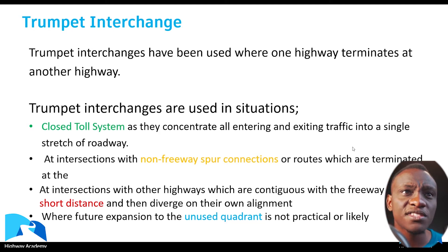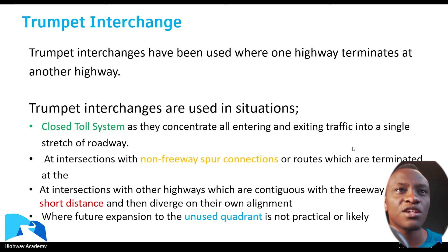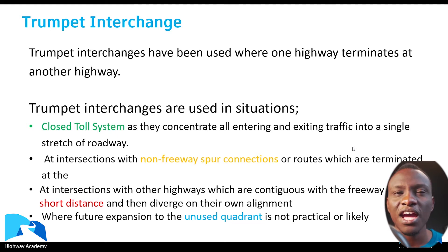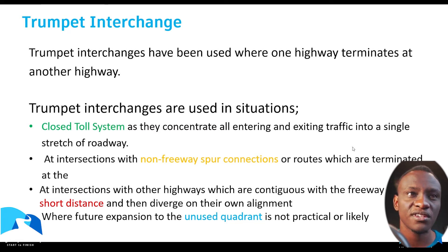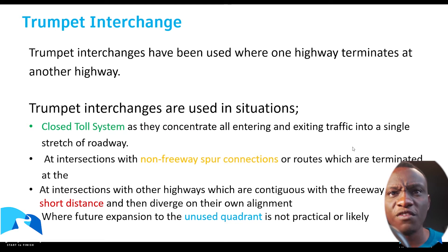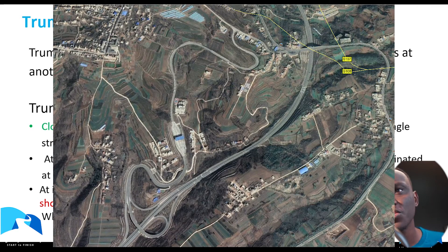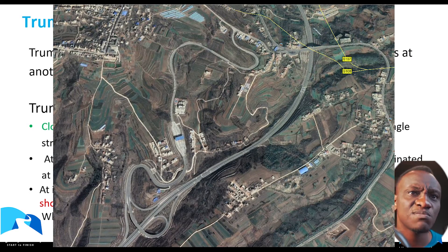Because with a closed-door system — the difference between an open-door system and a closed-door system was highlighted earlier in the course — the beauty is that they end up concentrating all the entering and exiting traffic into a single stretch of road. Also, where you have a non-freeway spur connection, the only way you can terminate it is by use of a trumpet interchange.